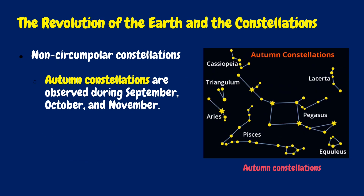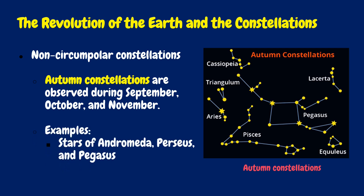Lastly, autumn constellations are observed during September, October, and November. Examples are Andromeda, Perseus, and Pegasus.